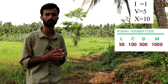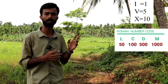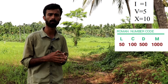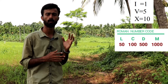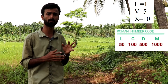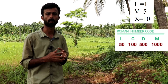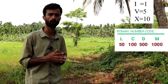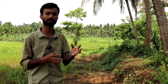The Roman numeral symbols are: I, V, X, L, C, D, M. L is 50, C is 100, D is 500, M is 1000.